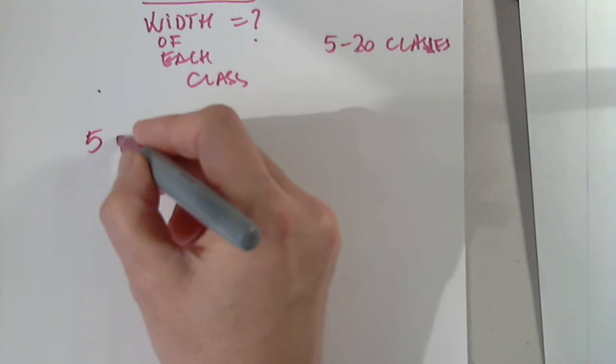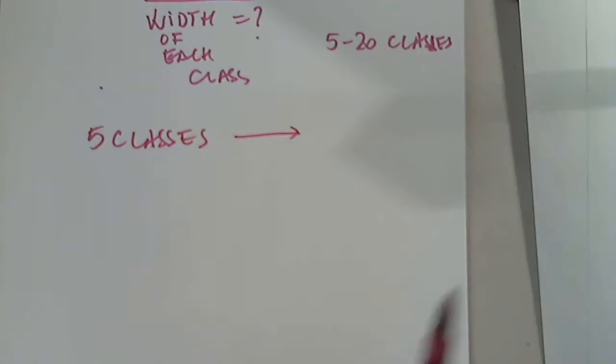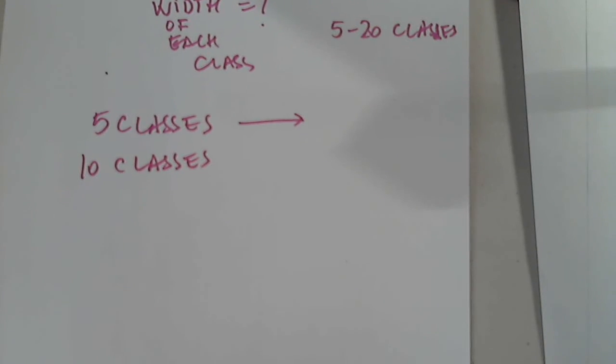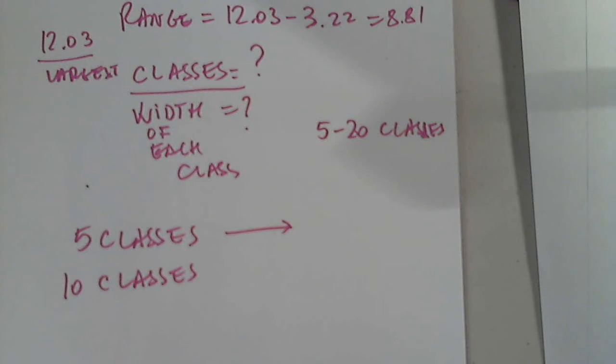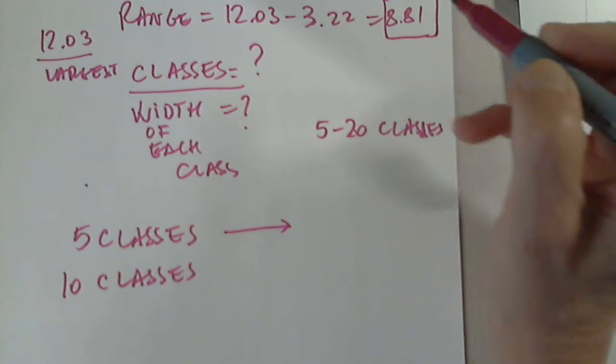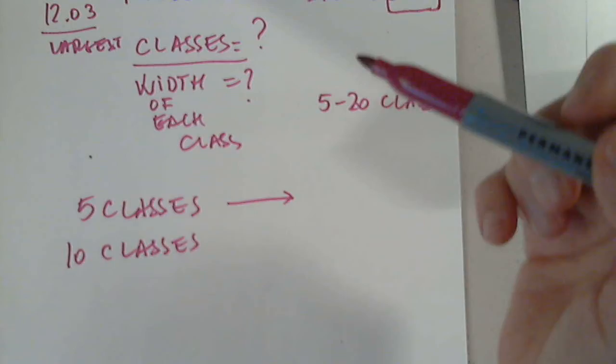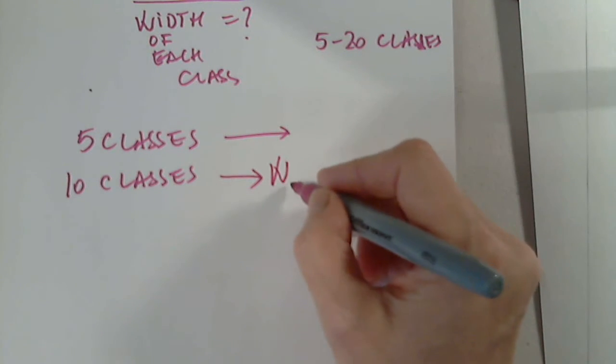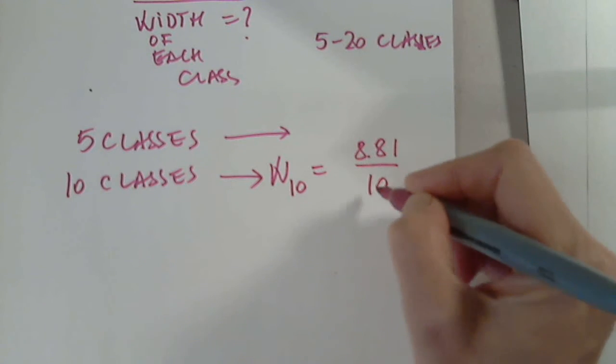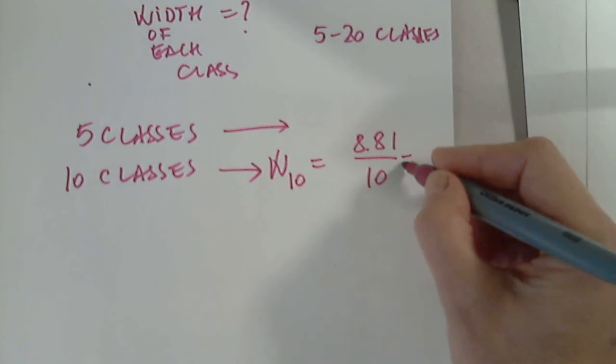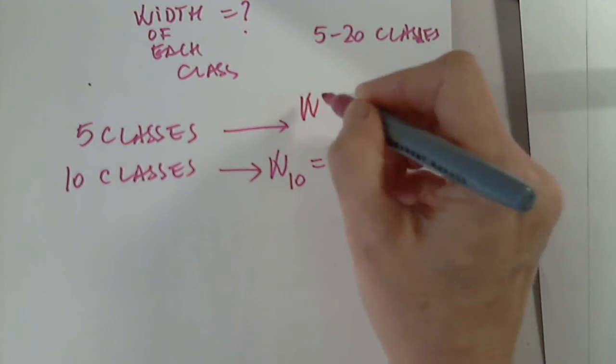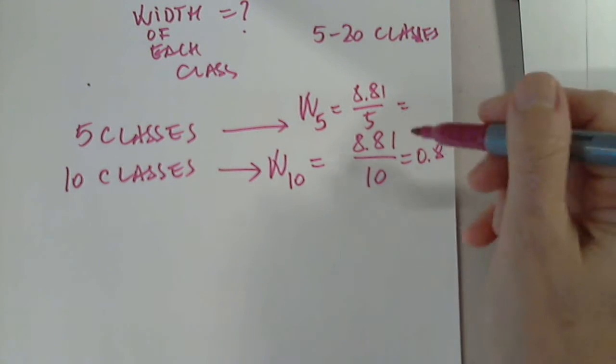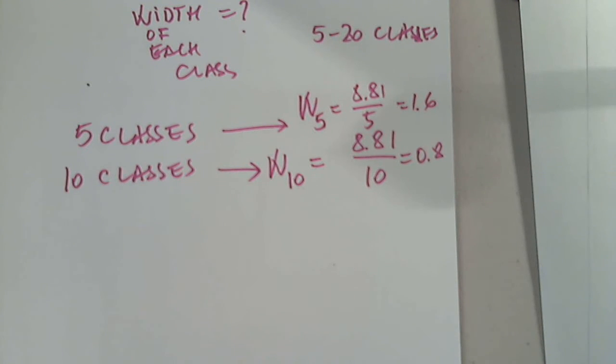Let's say we select 5 classes and see how the look of the histogram and then also 10 classes. Could you move the paper down just a little bit? Thank you. Is that okay? So we determine the range. If we use 10 classes for example. For 10 classes, the width with 10 classes will be 8.81 divided by 10. So that will be roughly 0.8. With 5 classes will be 8.81 divided by 5, which is roughly double of that, right? It's 1.6.